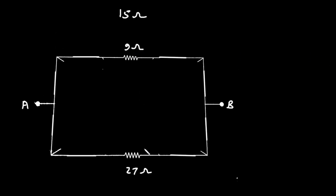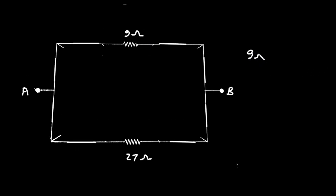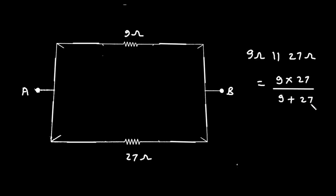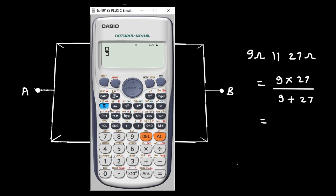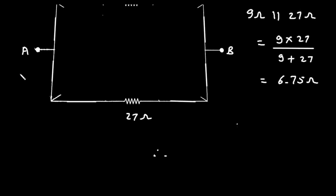Now here we can see this 9 ohm and 27 ohm are connected in parallel. So 9 into 27 divided by 9 plus 27 equals simply 6.75 ohm. Therefore RAB equals 6.75 ohm. So this is the final answer for this question.